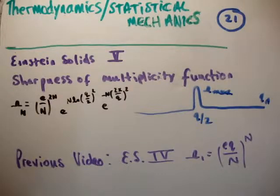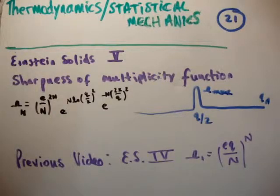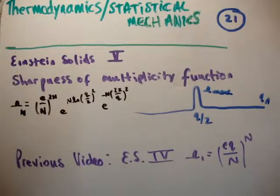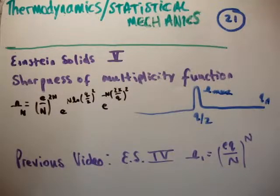In the previous video, Einstein solids 4, we proved the formula for the multiplicity of a single Einstein solid. The reason we're discussing the sharpness of the multiplicity function is to show that it is statistically overwhelmingly likely that the system will be in equilibrium when it is in its state of maximum multiplicity. With two solids, the maximum multiplicity is when half the energy is shared between both solids, and we'll see that the probability of it being anywhere else is tiny - that's why we never observe any other state.